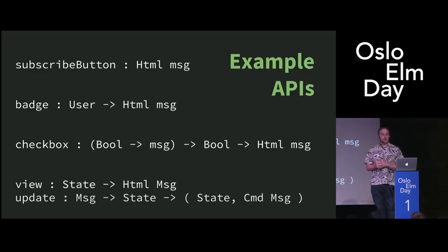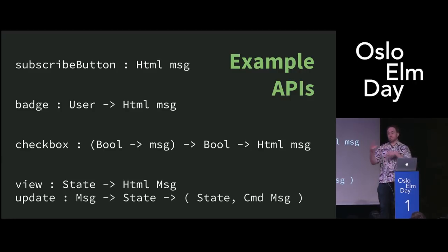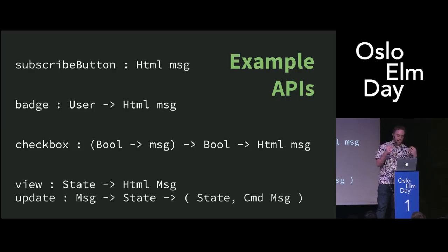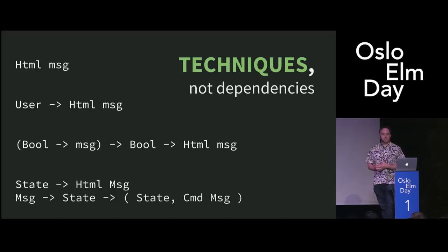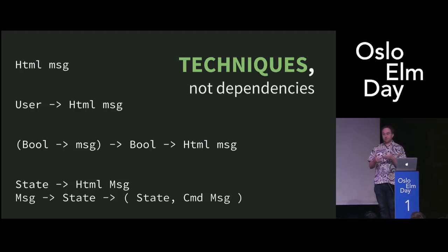So one of the things I also talked about was generalizing this. A subscribe button is kind of the simplest API you can have — it's just HTML, not even a function. Maybe you'd have a badge that takes the user and returns HTML. Or a checkbox, which does the teach-me-how-to-message thing. Or maybe finally you'd say, okay, I really need this idea of internal state — its own model, view, and update. And that's the way to go. I want to point out that these are techniques, not dependencies — in neither version of the SPA example was I importing a helper package for doing these. These are just ways to work with the tools you get from the normal Elm HTML package. There really isn't any need to install additional packages to work with these — I think those tools are not just good enough, but actually optimal.